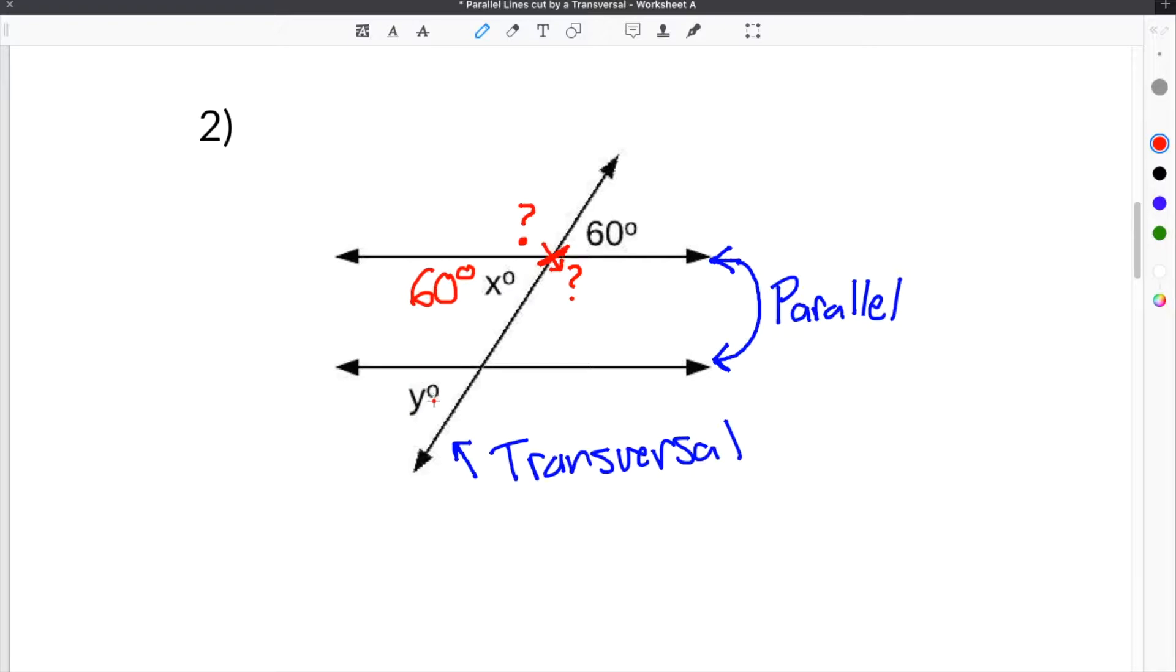Moving on to find y uses the second most important thing to remember when doing parallel lines cut by a transversal, and that's called corresponding angles. A corresponding angle is located in the same position at each of the intersections of the transversal. So if you look and you notice that the transversal creates four angles each time it crosses a parallel line.